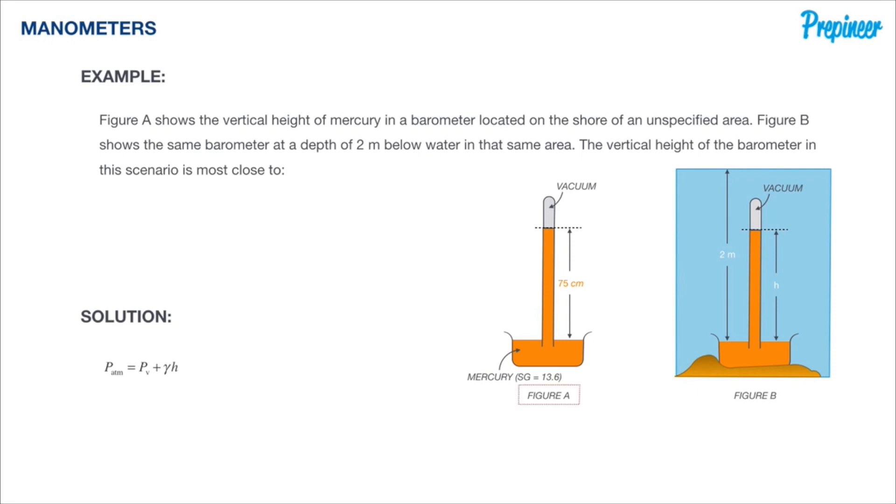So in this problem we're going to go ahead and start with Figure A because we've got to determine what the atmospheric pressure is. The problem states that the barometer is located on the shore of an unspecified area. For all we know this is on Mars. It doesn't really tell us anything other than it's an unspecified area. So we've got to confirm what the atmospheric pressure is. It may be 101 kPa like we're always accustomed to, or it might not be. So we've got to start with Figure A because it's given us enough information to determine what the atmospheric pressure is.